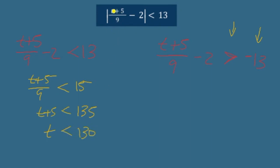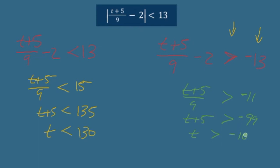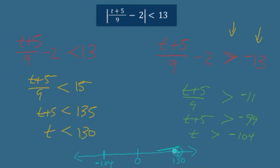So if I can keep T smaller than 130, and on the other side, add 2 to both sides: (T + 5)/9 is bigger than negative 11. Multiply by 9 on both sides: T + 5 is bigger than negative 99. Subtract 5 from both sides: T is bigger than negative 104. If I can keep T between negative 104 and positive 130, then I will keep this situation true. On the number line we have 130 and negative 104. We're not allowed to equal 130 or negative 104.